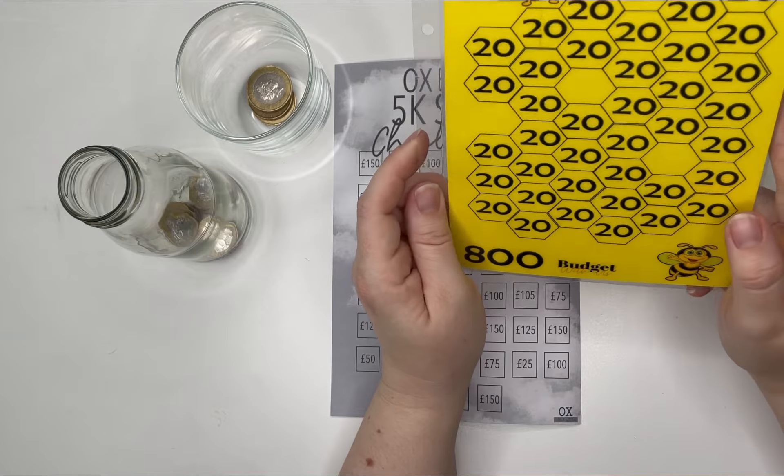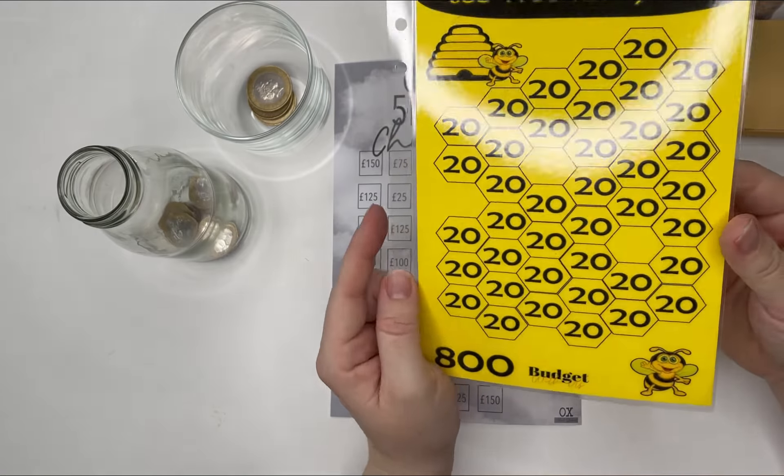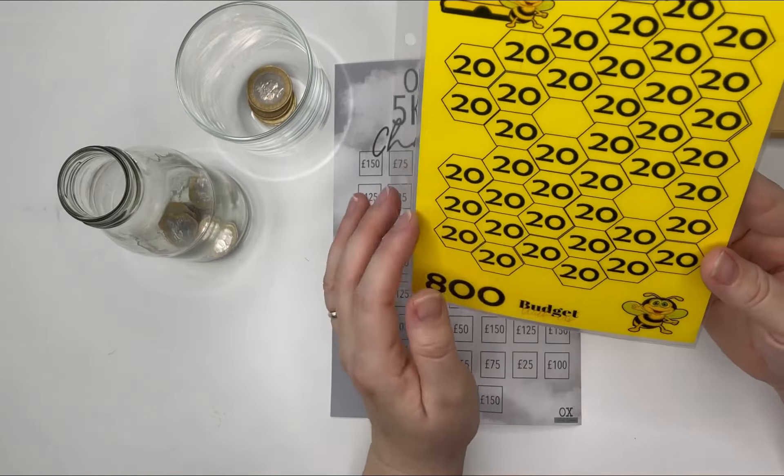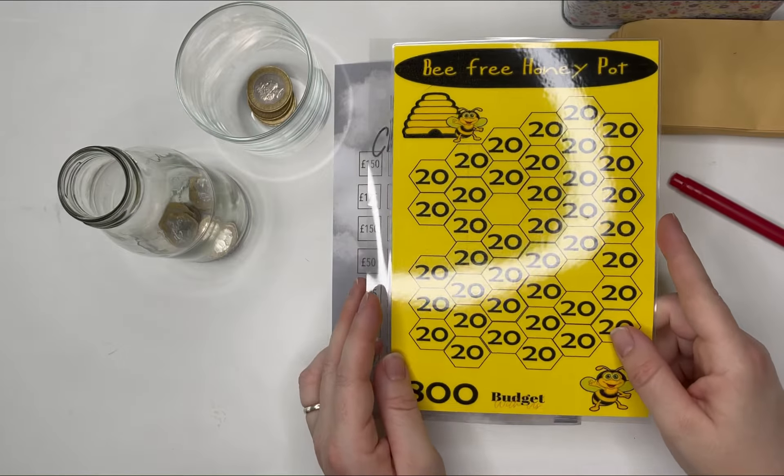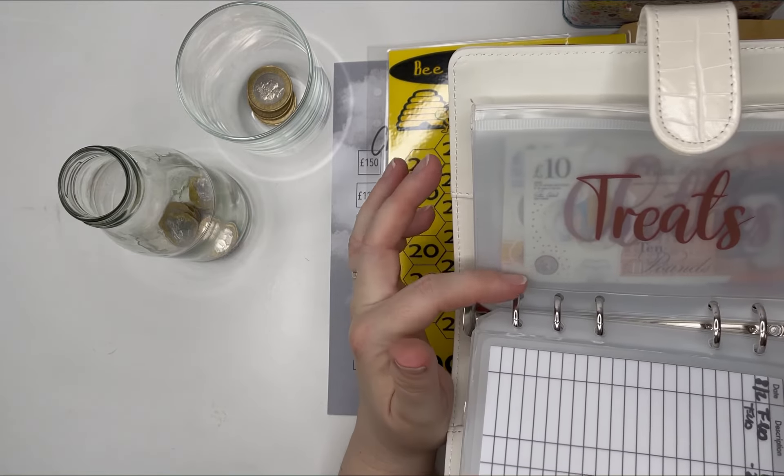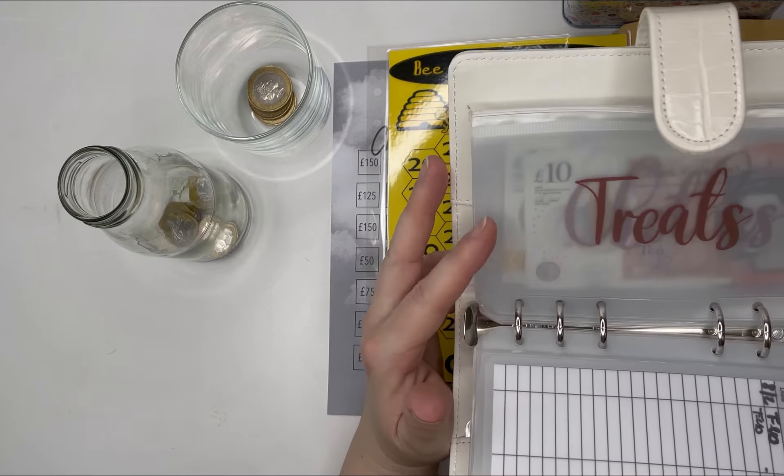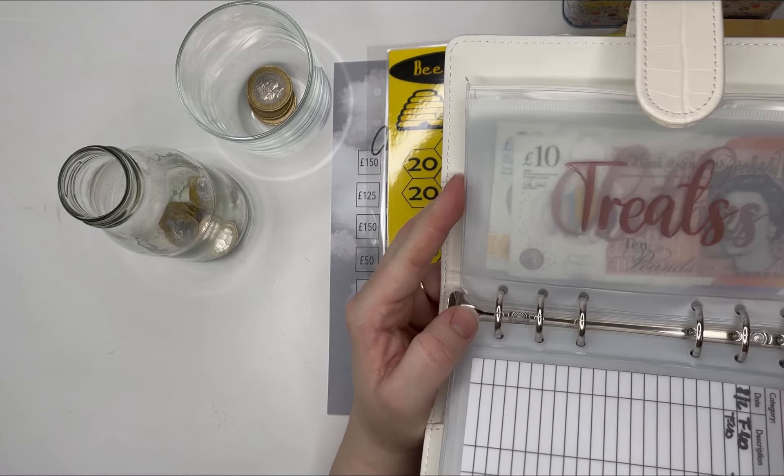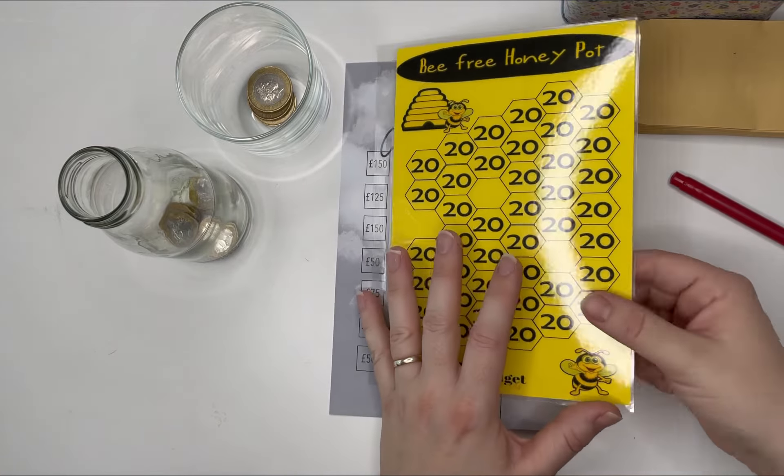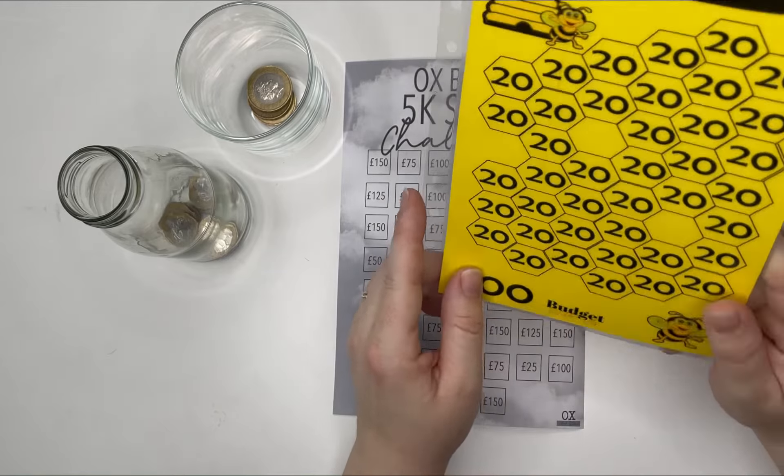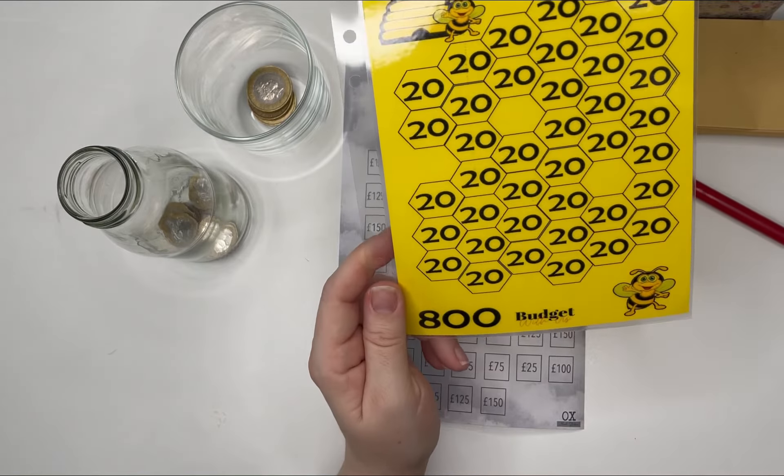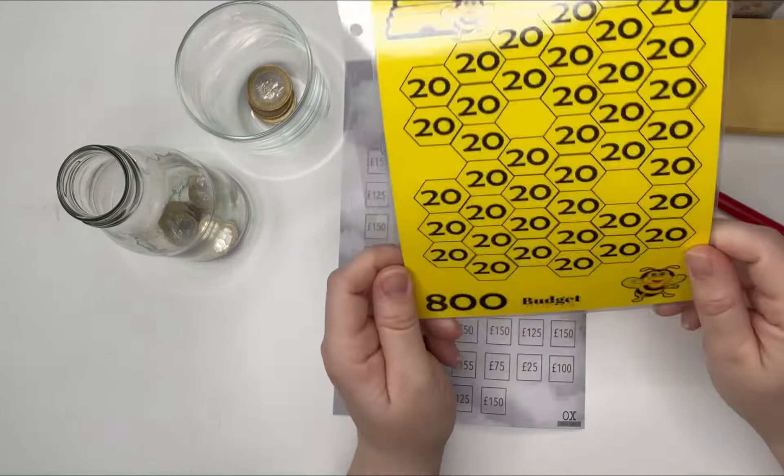The second one, this is my, well it had bees on it so I could not resist getting it with the name of my channel, and this is to save 800 pounds using twenties. What I'm going to use that to do is in my sinking funds I've got a treats envelope, and that's for something big like I haven't decided what I want, but maybe a handbag or a piece of jewelry, something that's worth saving up for but I don't want to come out of my other bits and pieces. So I'm going to use this 20 pound savings thing to get me 800 pounds to fund that sinking fund. That's there for when I want it. I think what I'm going to try and do is not withdraw from my treats until I've completed this.